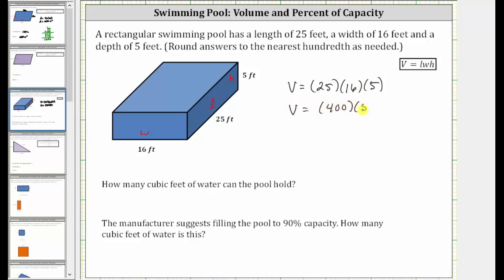The volume is equal to 400 times five, and 400 times five is equal to 2,000. The volume is equal to 2,000 cubic feet or 2,000 feet cubed. So we now know the pool can hold 2,000 cubic feet of water.